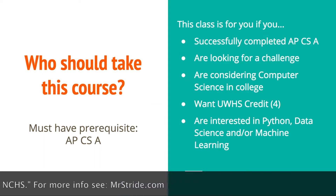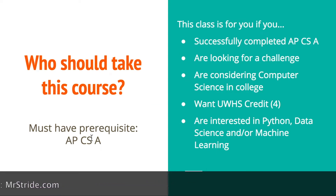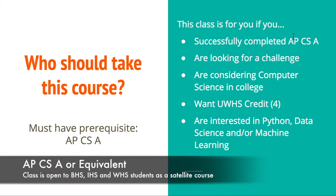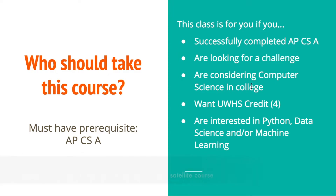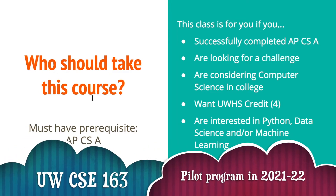Who should take this course? Anyone who has finished APCS A can take this — note that the A part is different than APCS Principles. So if you've successfully completed that class and you're looking for a challenge and you are considering a computer science degree in college, this one's for you. You can get University of Washington high school credit — a UW transcript with four credits on it for taking this course. This is CSE 163 Intermediate Data Programming taught at the University of Washington.